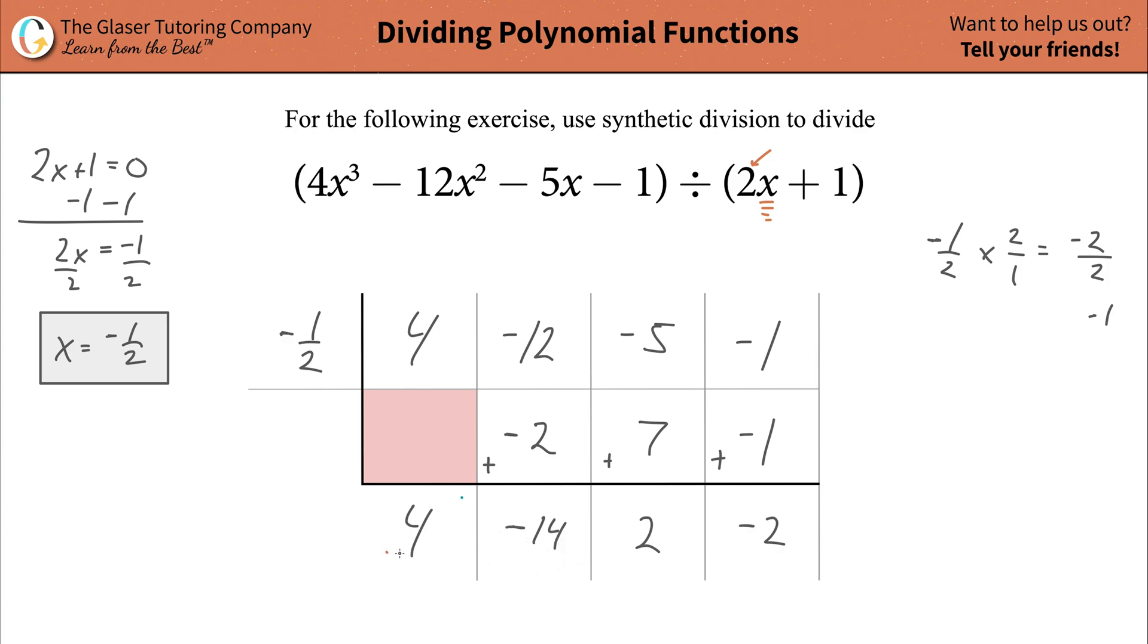And all you're going to do is you're going to divide each of these by now two. Easy peasy. So what's four divided by two? Well, that's a two. What's negative 14 over two? Well, that's a negative seven. What's two over two? Well, that's a one. And this, just bring it straight down. That's just a negative two. Now these down here represent your true values, your real coefficients. And now we're basically done.